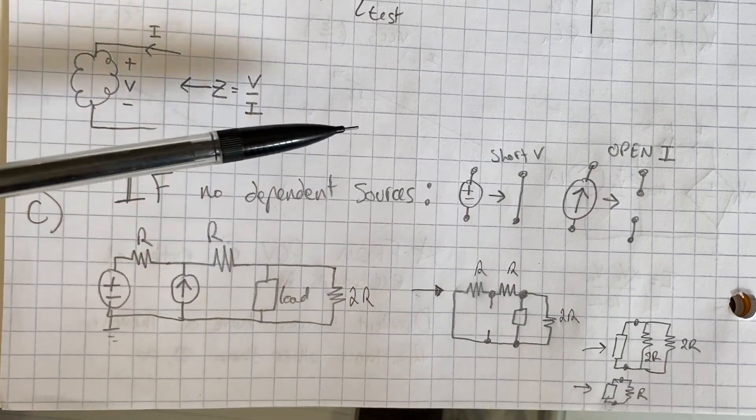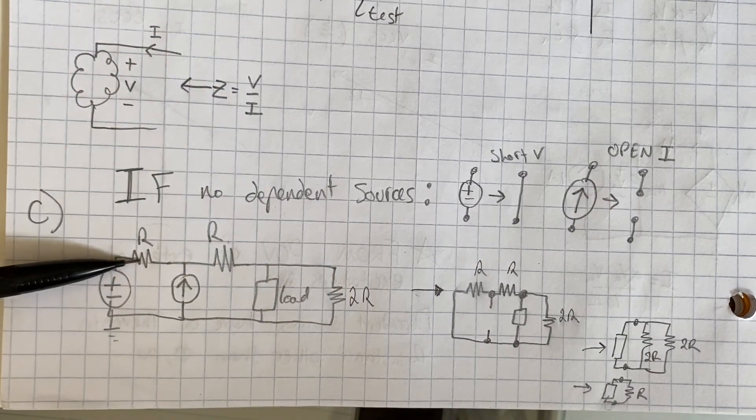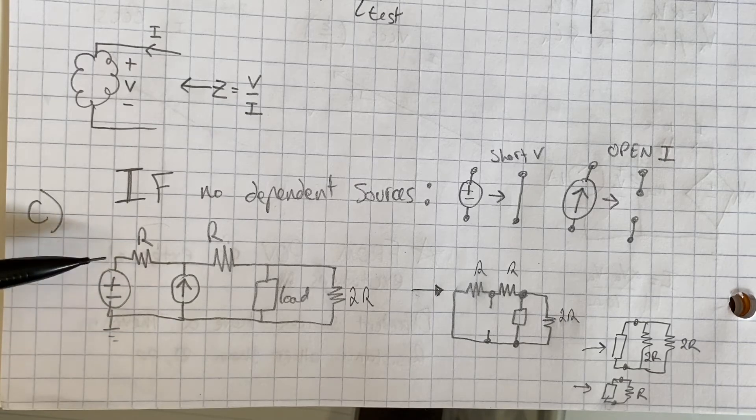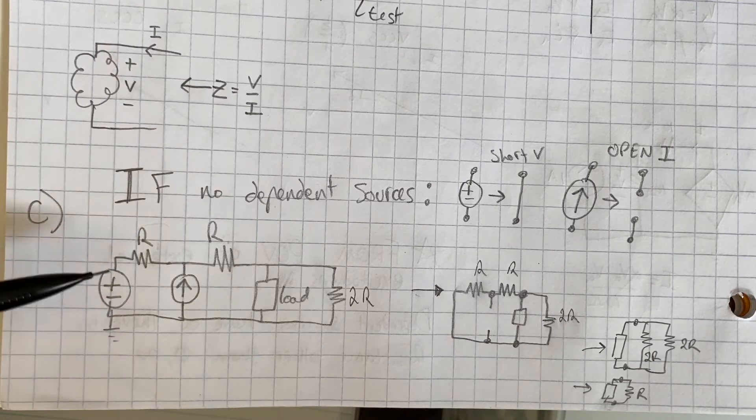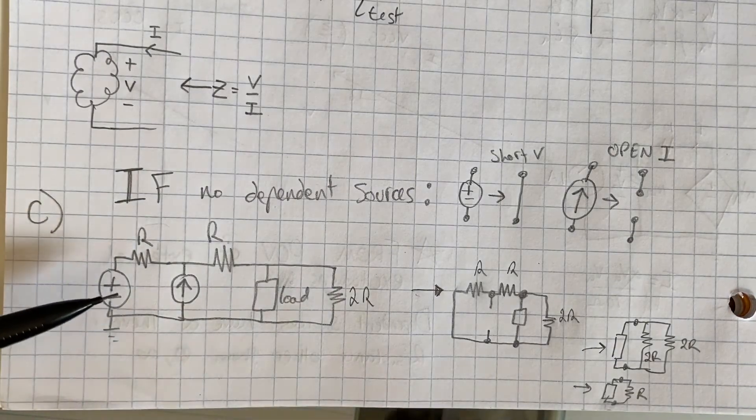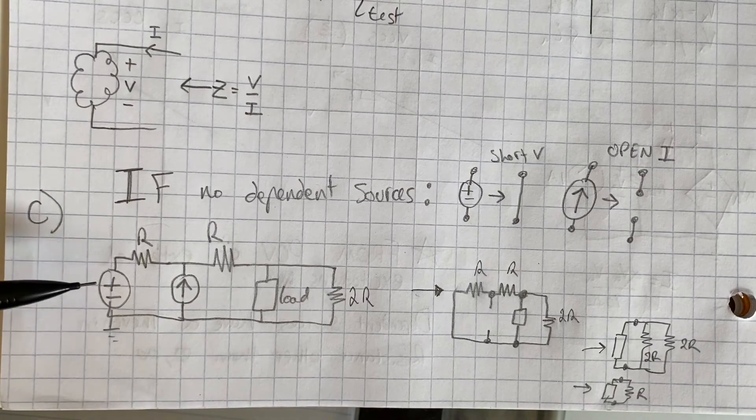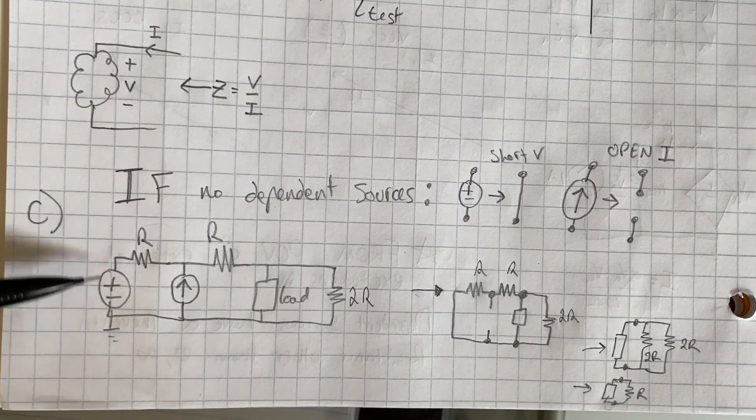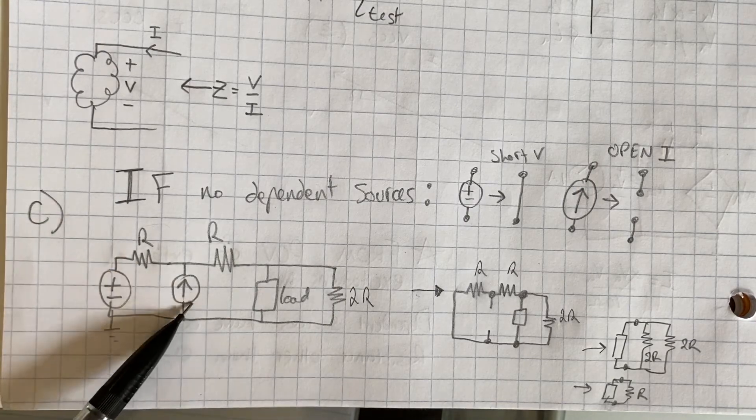And the reason we can short out voltage sources is any amount of current can enter this voltage source, which means it does not have a resistance associated with it. Again, my previous video kind of goes into more detail. But you can think of it as just any current can enter this and it will provide no resistance against that current entering.